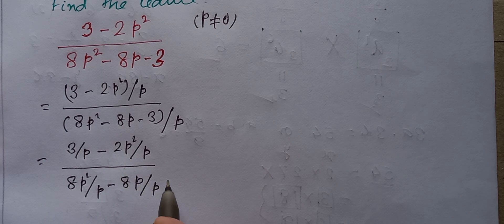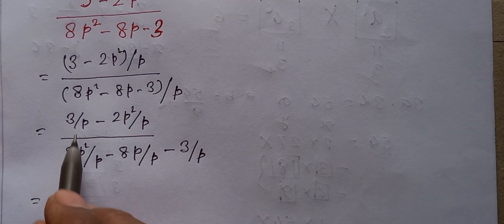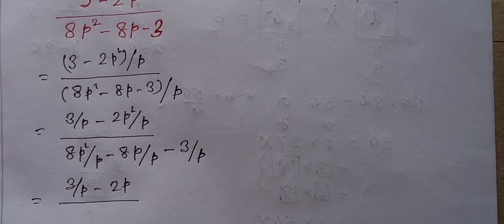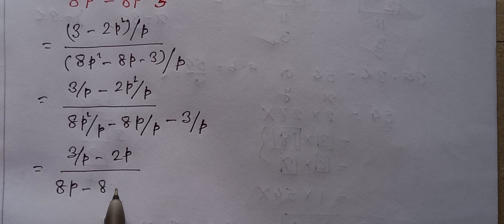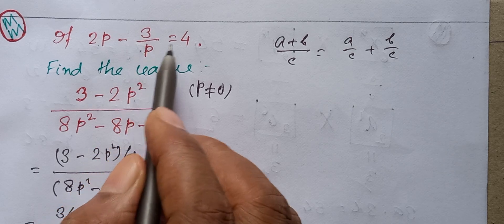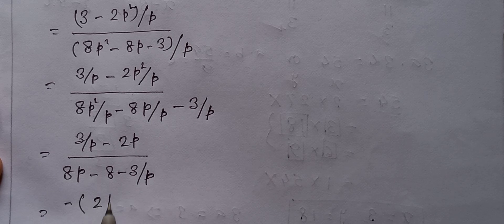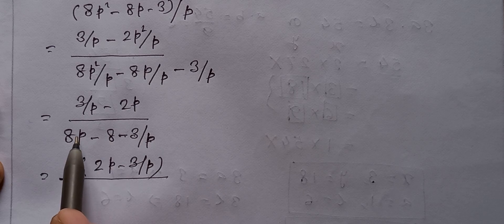After dividing, the numerator becomes 3 by p minus 2p, and the denominator becomes 8p minus 8 minus 3 by p. Now, notice that 2p minus 3 by p equals 4 is given, so we substitute that condition here.